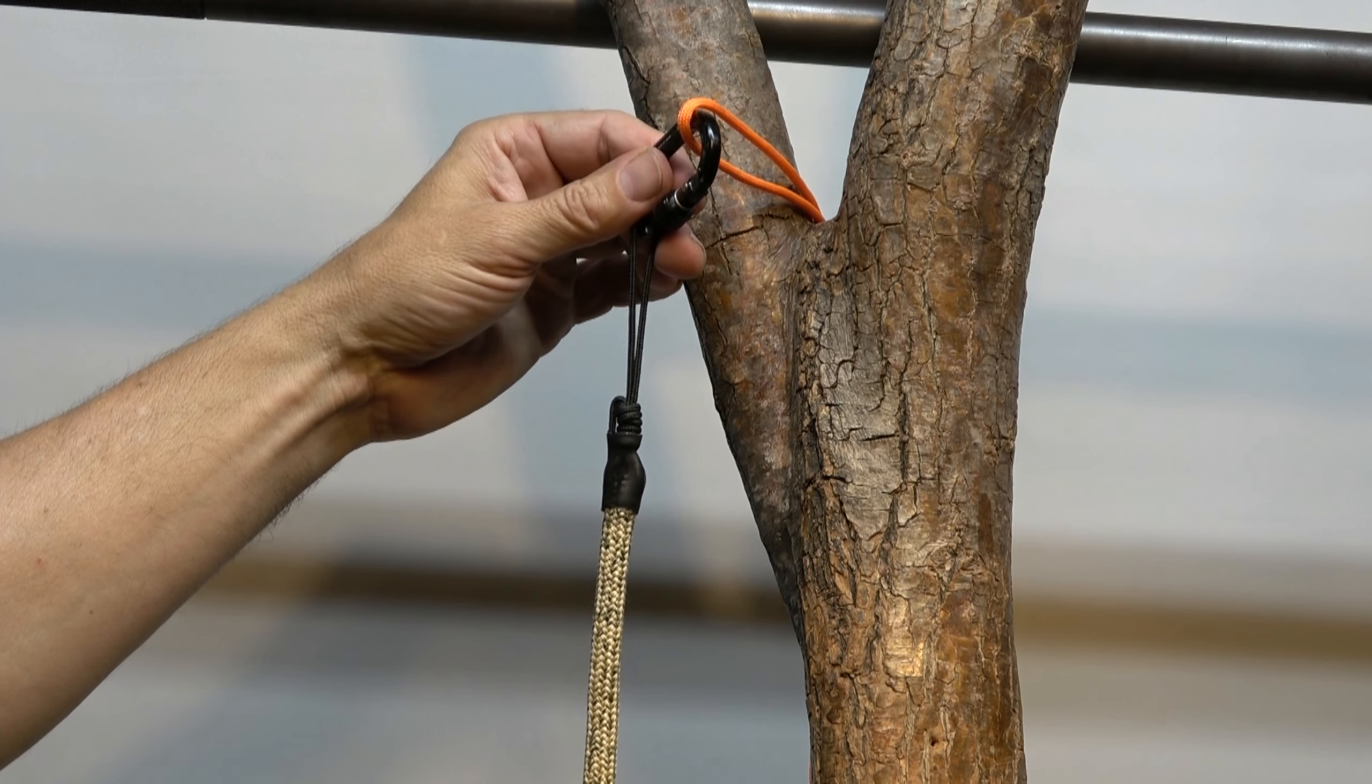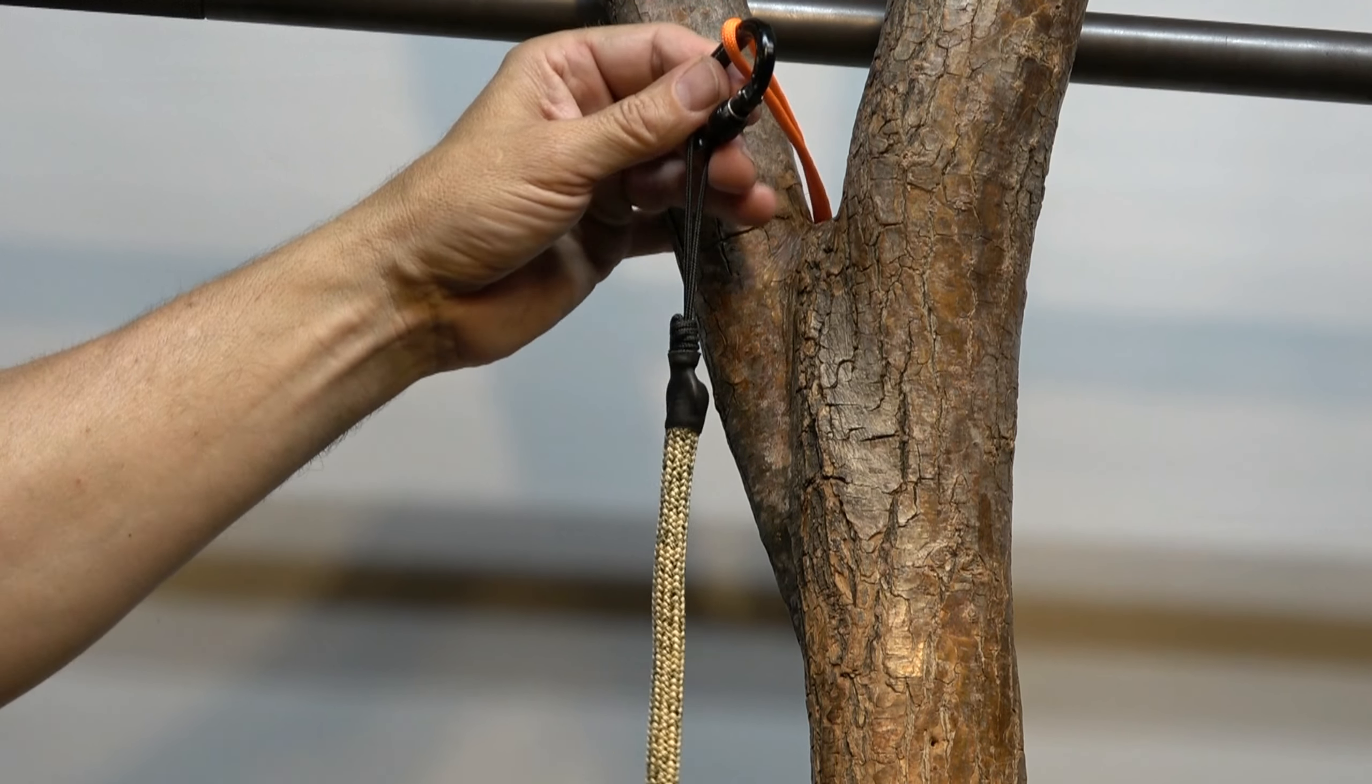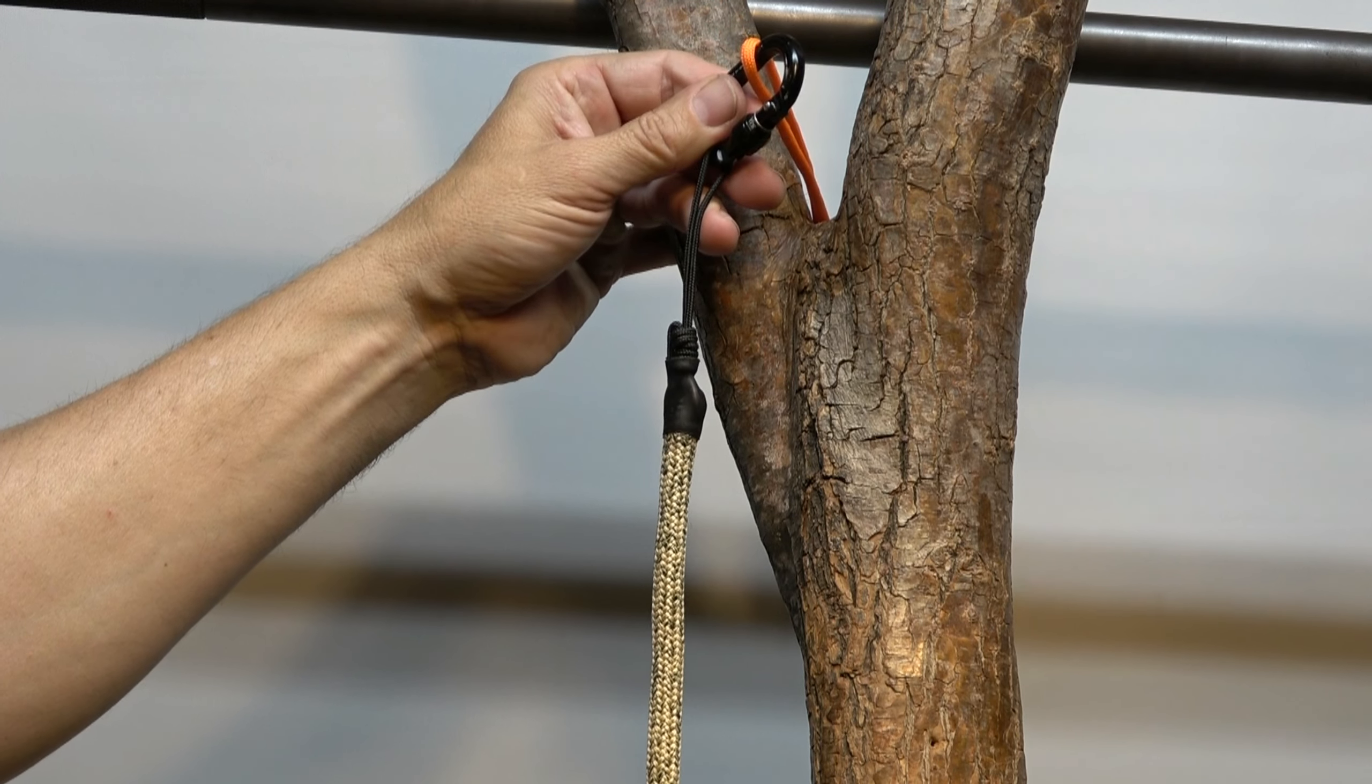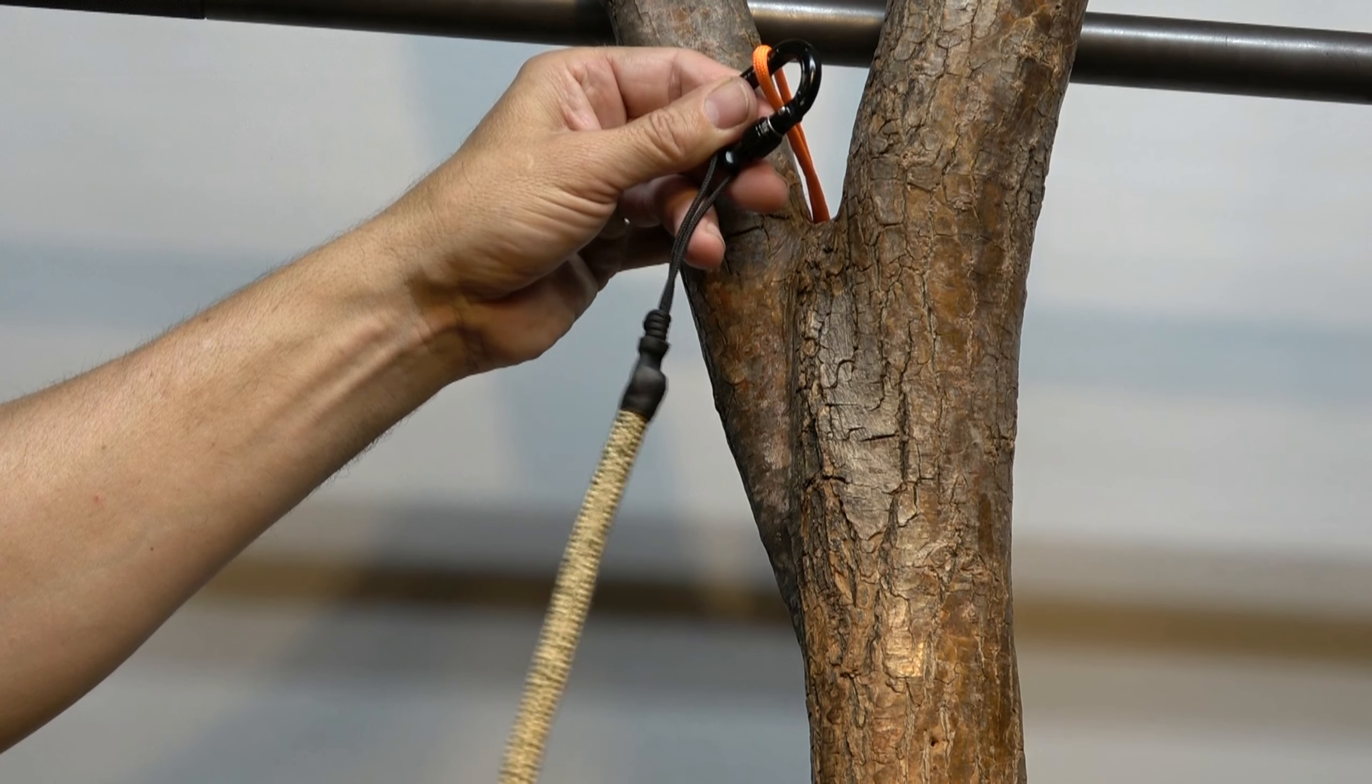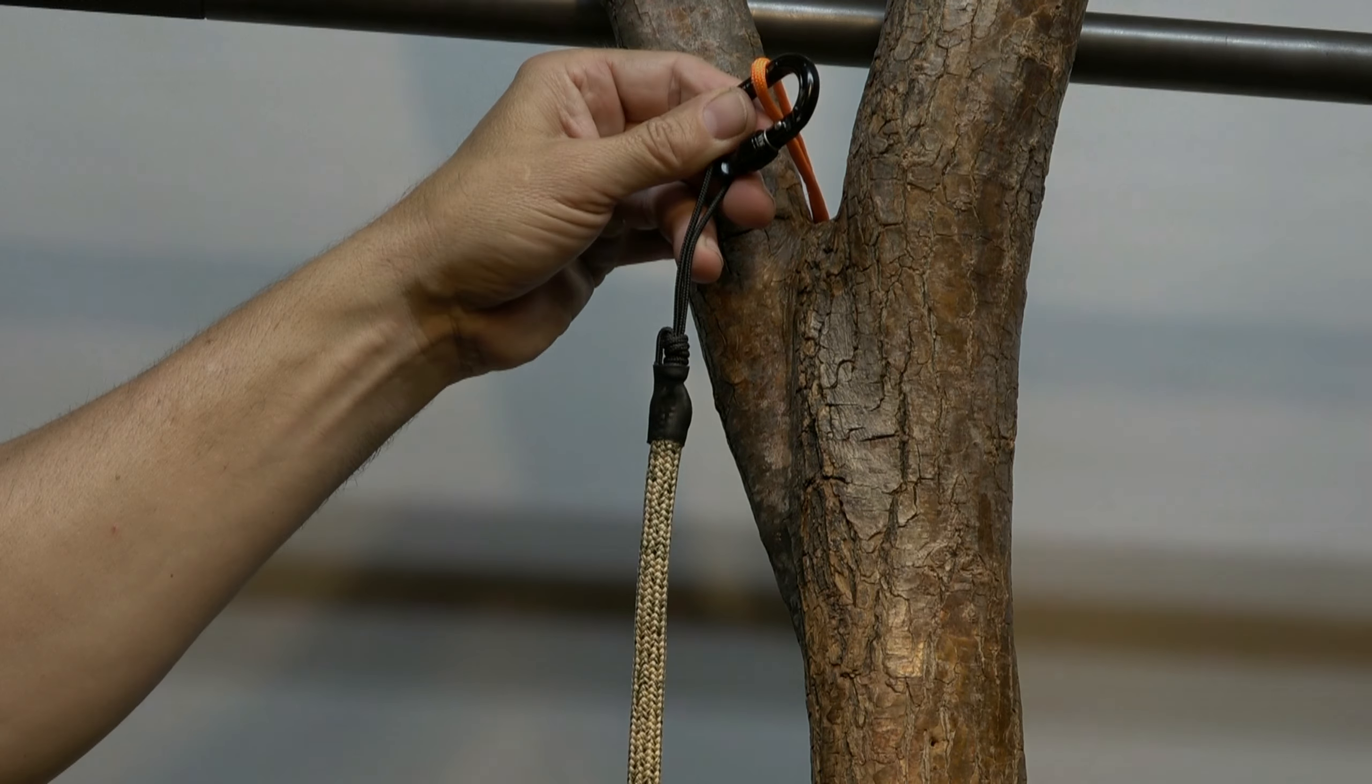All right, there you have it, there's my JRB end loop. I'll be looking forward to getting on this brand new Rougarou and showing you what we can do with it soon. But again, the first thing I do when I get a climbing rope anymore is I put a pair of JRB end loops on it. Thanks my friend.